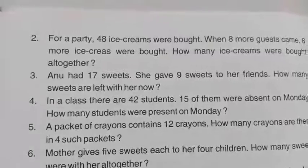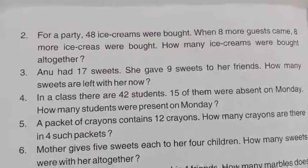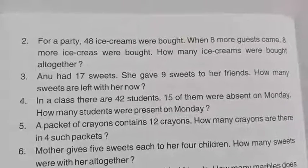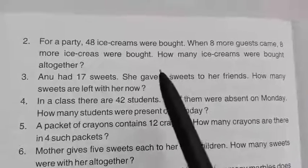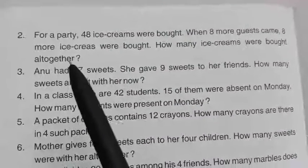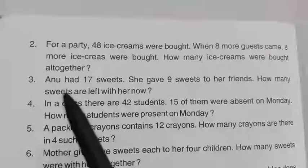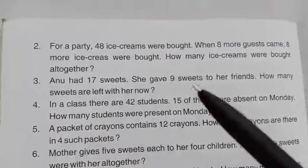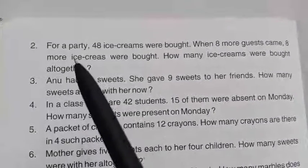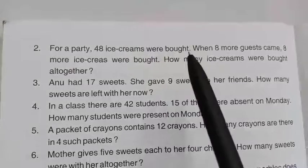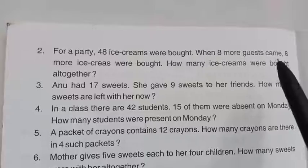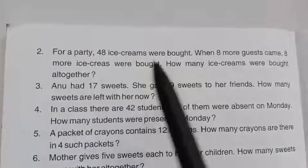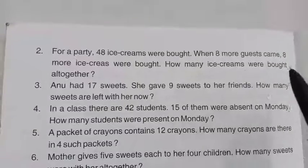Now let's move to the next page, number 134. The second question: for a party, 48 ice creams were bought. When 8 more guests came, 8 more ice creams were bought. How many ice creams were bought altogether? Before solving the question, you need to read it properly — you should understand the question well.